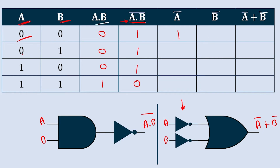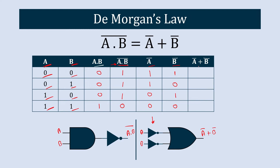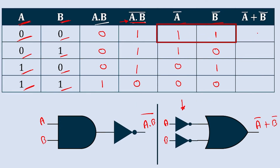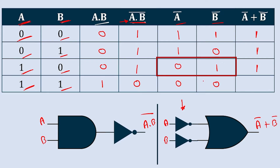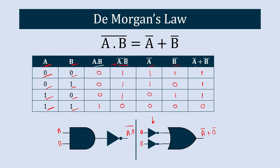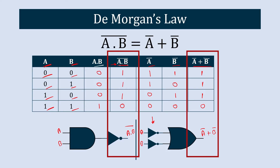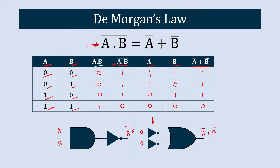For A bar: when A is 0, A bar is 1; when A is 0, A bar is 1; when A is 1, A bar is 0; when A is 1, A bar is 0. Similarly for B bar. Now adding A bar and B bar using OR: 1 OR 1 = 1, 1 OR 0 = 1, 0 OR 1 = 1, 0 OR 0 = 0. Comparing columns A bar plus B bar and A dot B bar, both results are identical — hence we prove the first law of De Morgan's theorem.